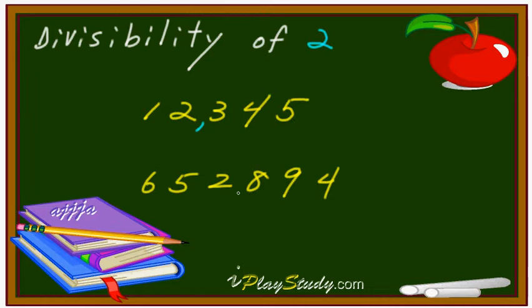Or what about this one? Long number again. 652,894. But in this case, divisible by 2 means they are actually asking, is it an even number or odd number? That's right.